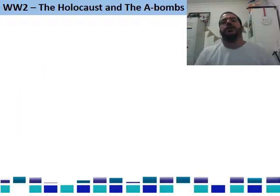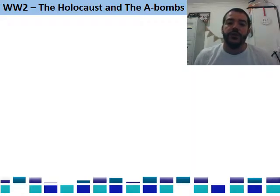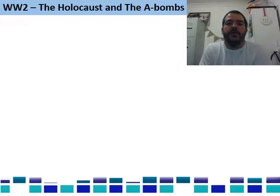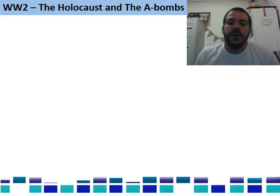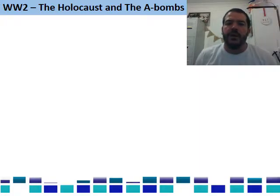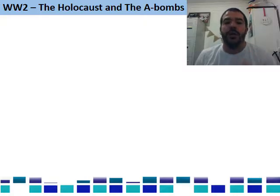Last term we looked at World War II — what caused it and what happened during it. So now we're going to start looking at what happened afterwards, in the 70 years after that, in terms of the rights and freedoms that we have today. It's important to recognise that World War II witnessed levels of human suffering that are quite frankly nearly impossible for us to really comprehend.